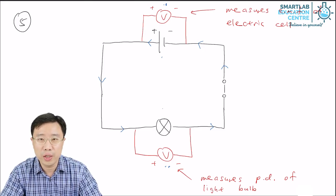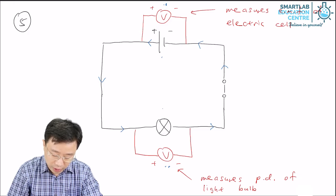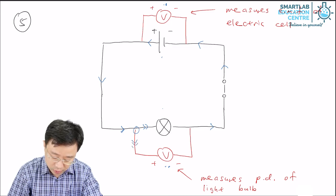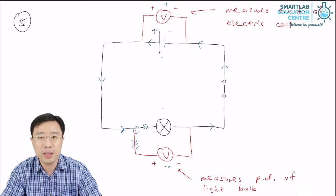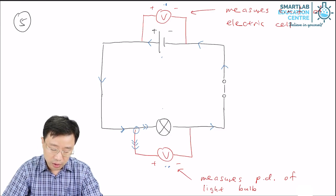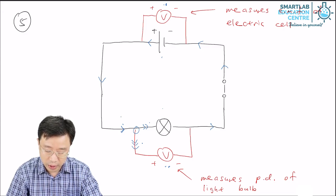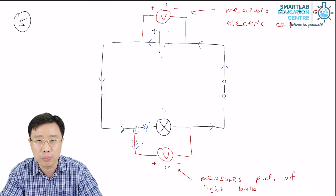If you look at the way the voltmeter is connected, for the case of the light bulb, when the current flows to here it will come to a junction, and at this junction the current will split up into two currents. So this arrangement of the light bulb and the voltmeter results in one current splitting up into two currents — originally there is only one way for current to flow, but because of the way the light bulb and the voltmeter are connected, there are now two ways for the current to flow.